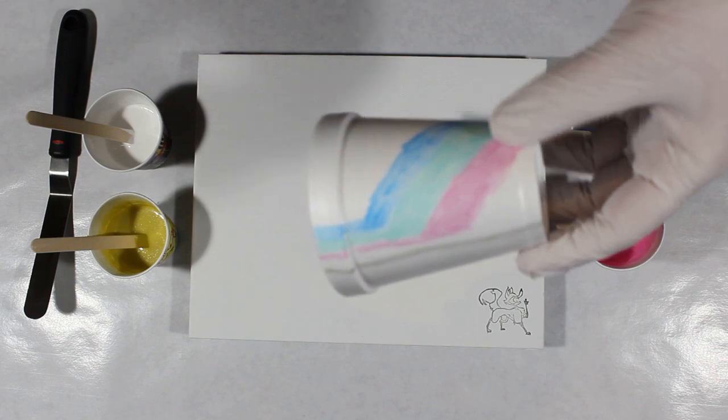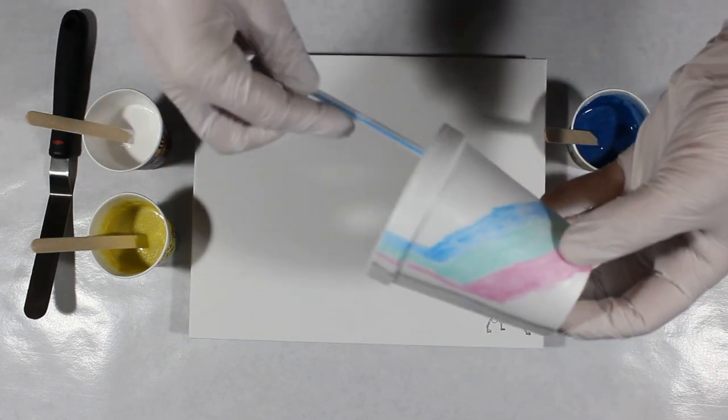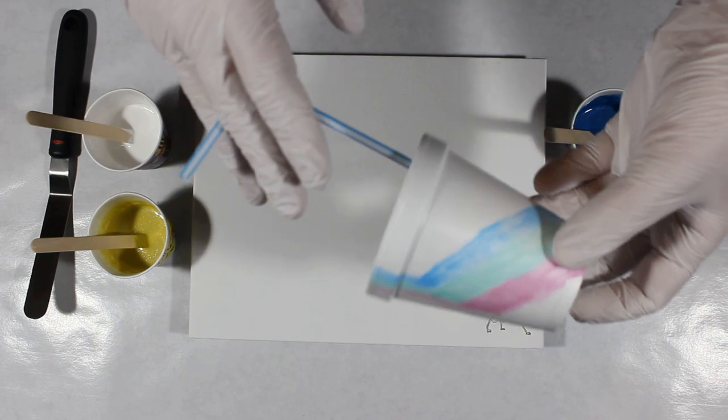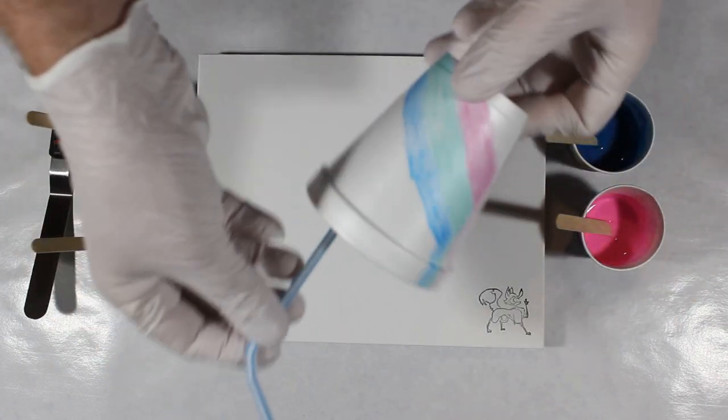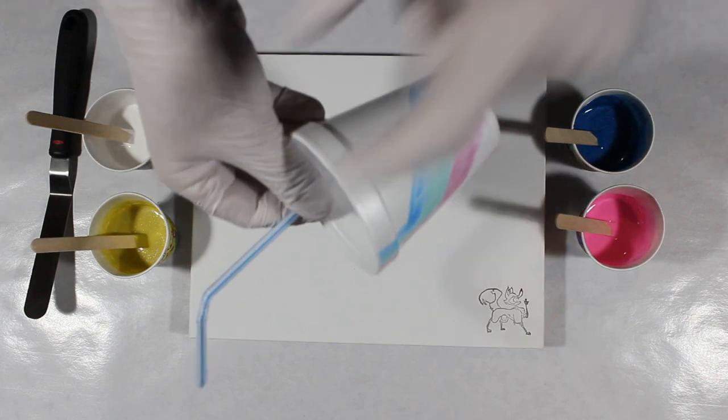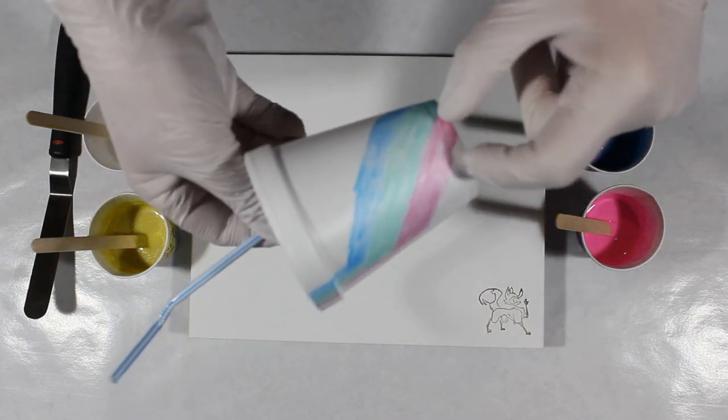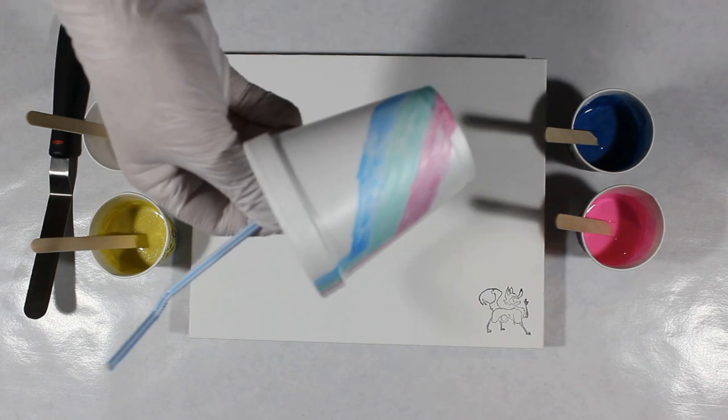But instead, what if you were to put a straw into the bottom of the cup and give it a quick blow, like you're trying to blow bubbles in chocolate milk? In this case, you're going to put air into the bottom, hit the white paint, and it's going to bubble up through the surface.